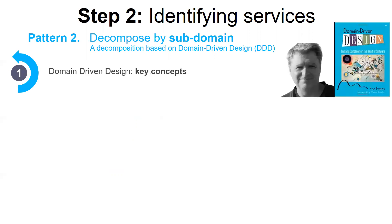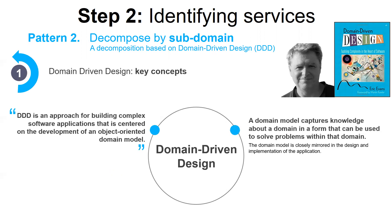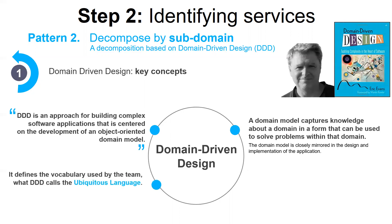DDD is described in the famous book Domain-Driven Design written by Eric Evans as an approach for building complex software applications. DDD is centered on the development of an object-oriented domain model. The domain model captures knowledge about a domain in a form that can be used to solve problems within that domain. The domain model is closely mirrored in the design and implementation of the application. The domain model defines the vocabulary used by the team, which is called the ubiquitous language.